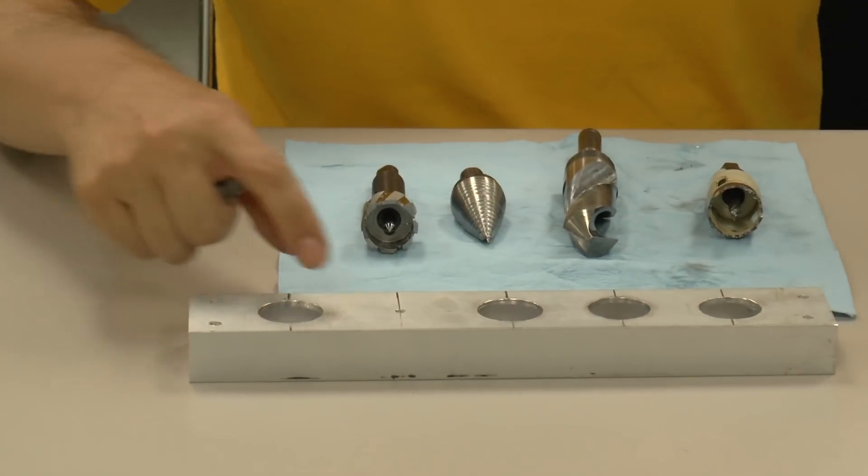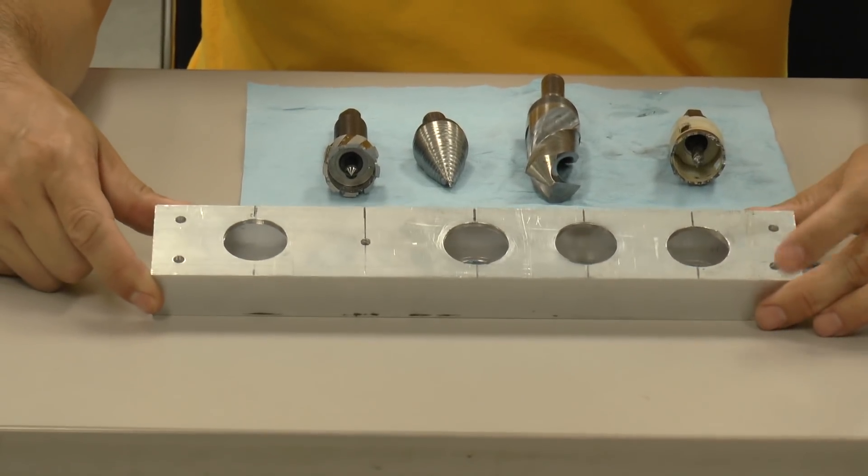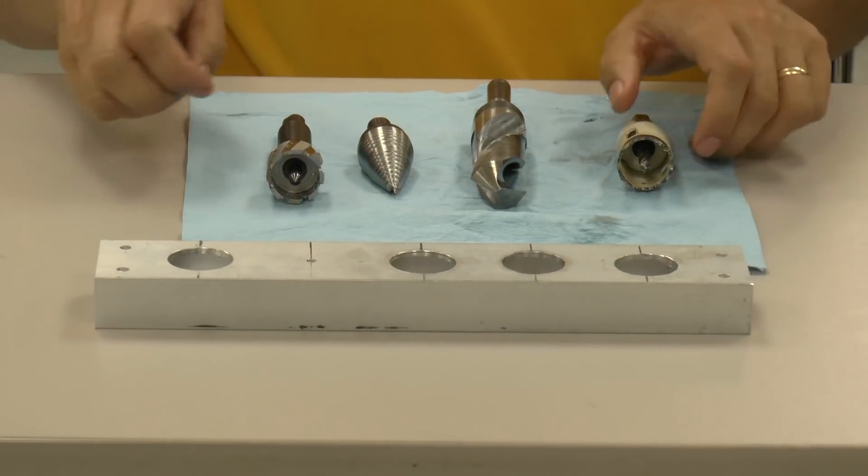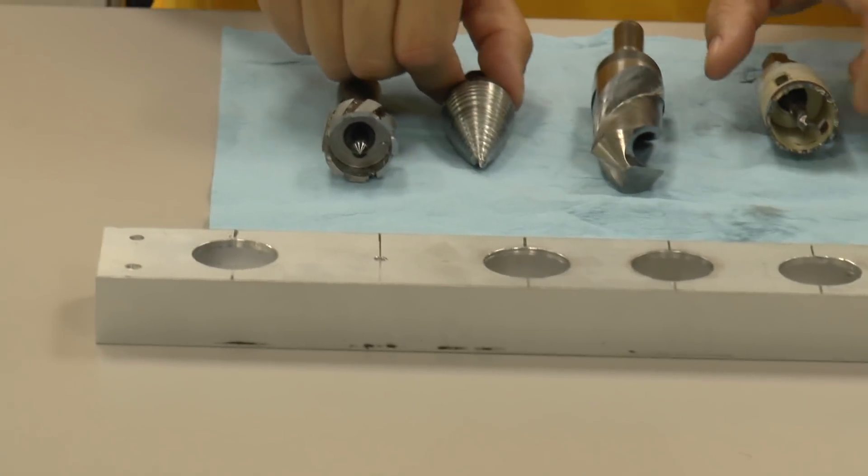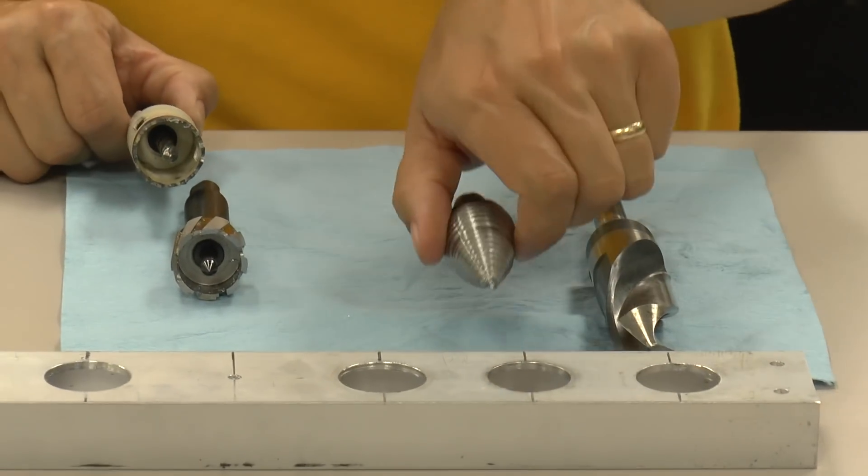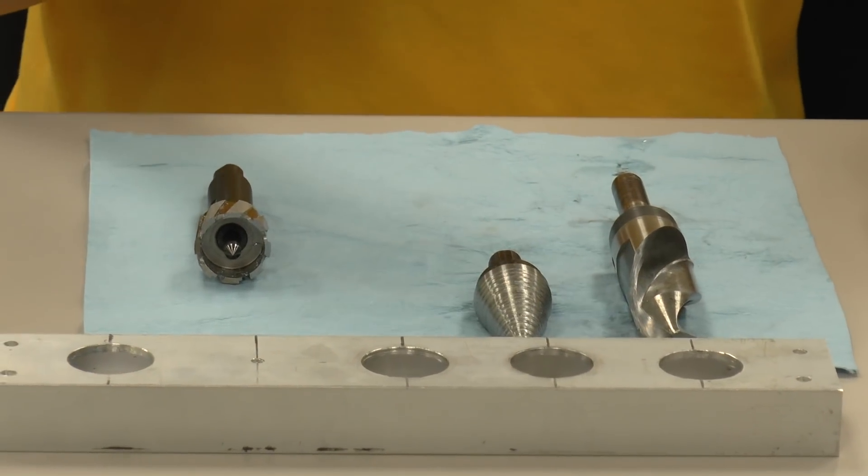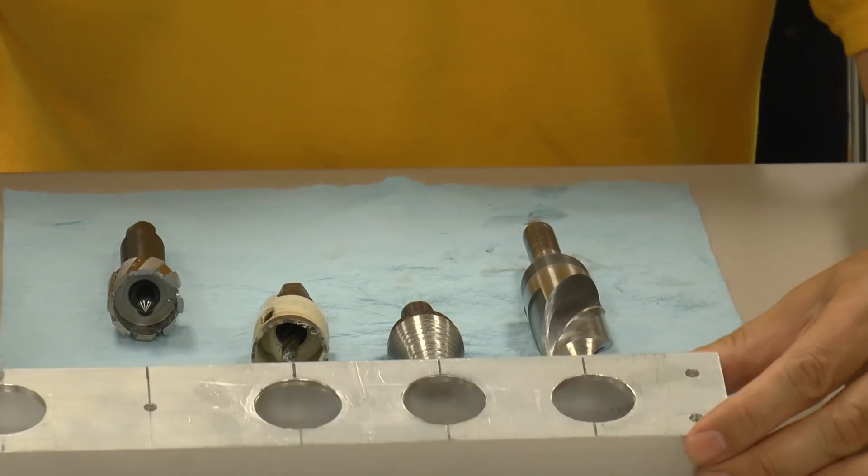So this was the first test piece that we did. The bearing, or the hole... I'm going to arrange these tools in order. So we had the spiral drill goes with that hole, the step drill goes with that hole, the wood drill goes with that one. And I'll show you the results that you get.